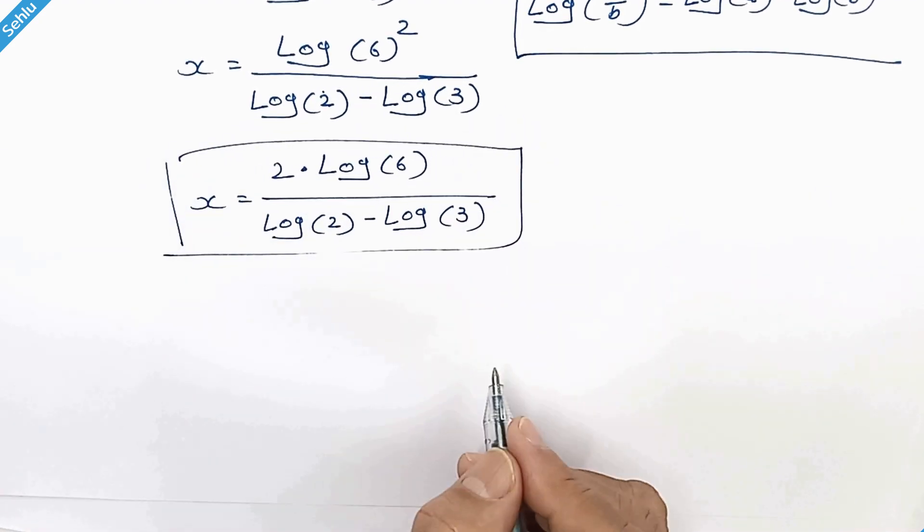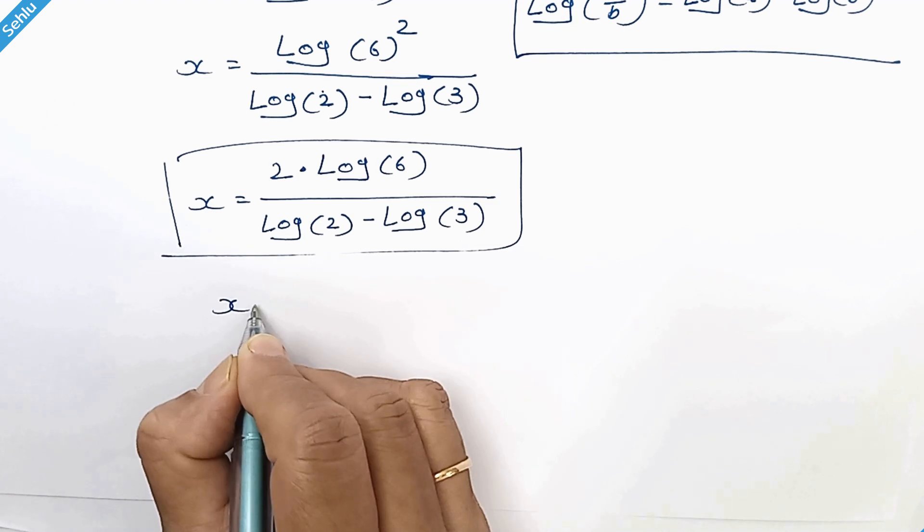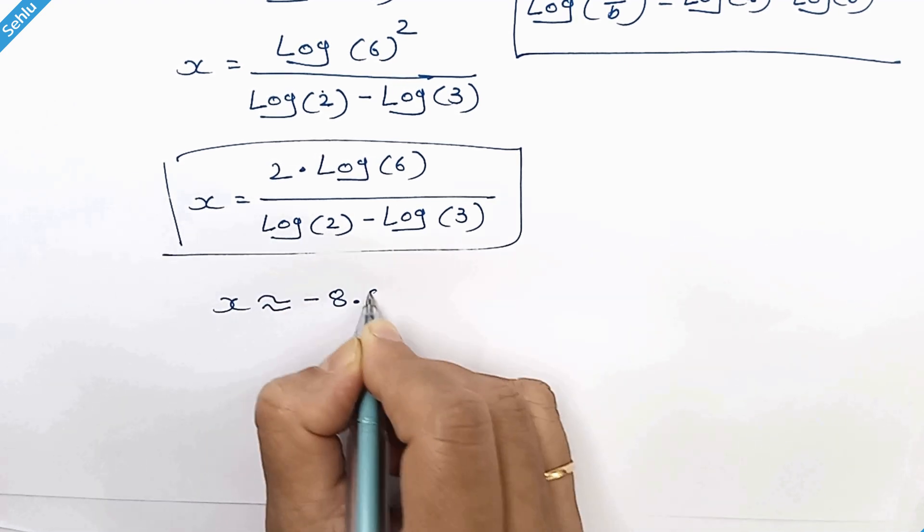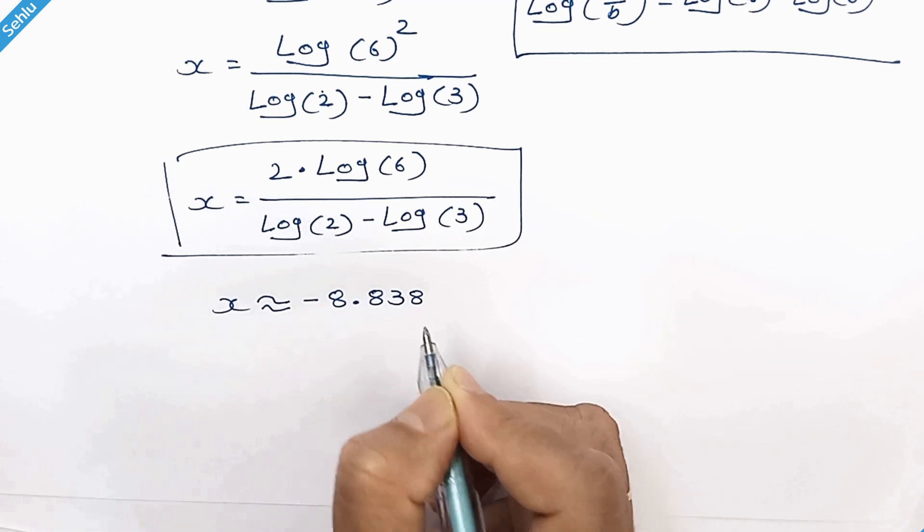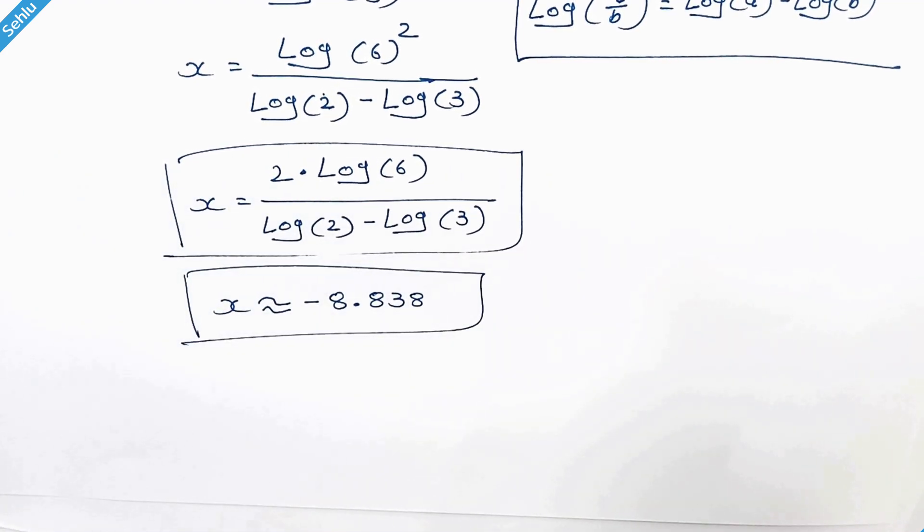And this is the answer. Let's use a calculator here and it will give us approximately negative 8.838. Thanks for watching, please subscribe, we will meet in the next one, bye bye.